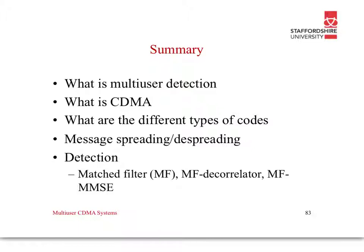In summary, we've answered: what is multi-user detection and what is CDMA; what are the different types of codes used in CDMA; what is message-spreading and de-spreading with an example; and once we've spread, how do we detect what was actually transmitted. Three examples of detectors have been given: matched filters, matched filter decorrelators, and minimum mean squared error matched filters. Thank you.